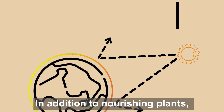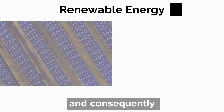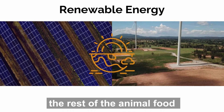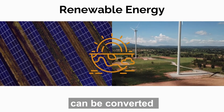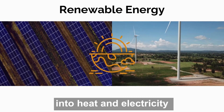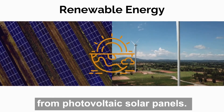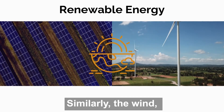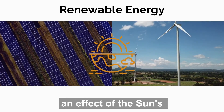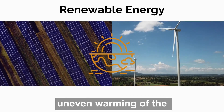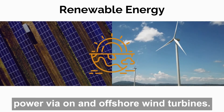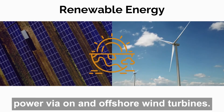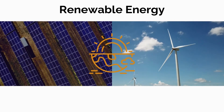In addition to nourishing plants and consequently the rest of the animal food chain, energy from the sun can be converted into heat and electricity through photovoltaic solar panels. Similarly, the wind, an effect of the sun's uneven warming of the atmosphere, can generate power via on and offshore wind turbines.